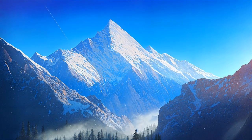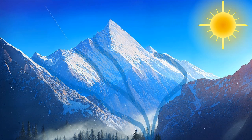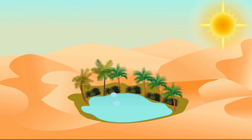In very cold places like the top of mountains, water can freeze into ice and snow. The heat from the sun melts the ice, causing it to turn into a liquid and flow down the mountains. The sun will then heat up the melted water, causing it to evaporate. In warm environments the sun heats up the water faster, causing evaporation to happen more quickly.